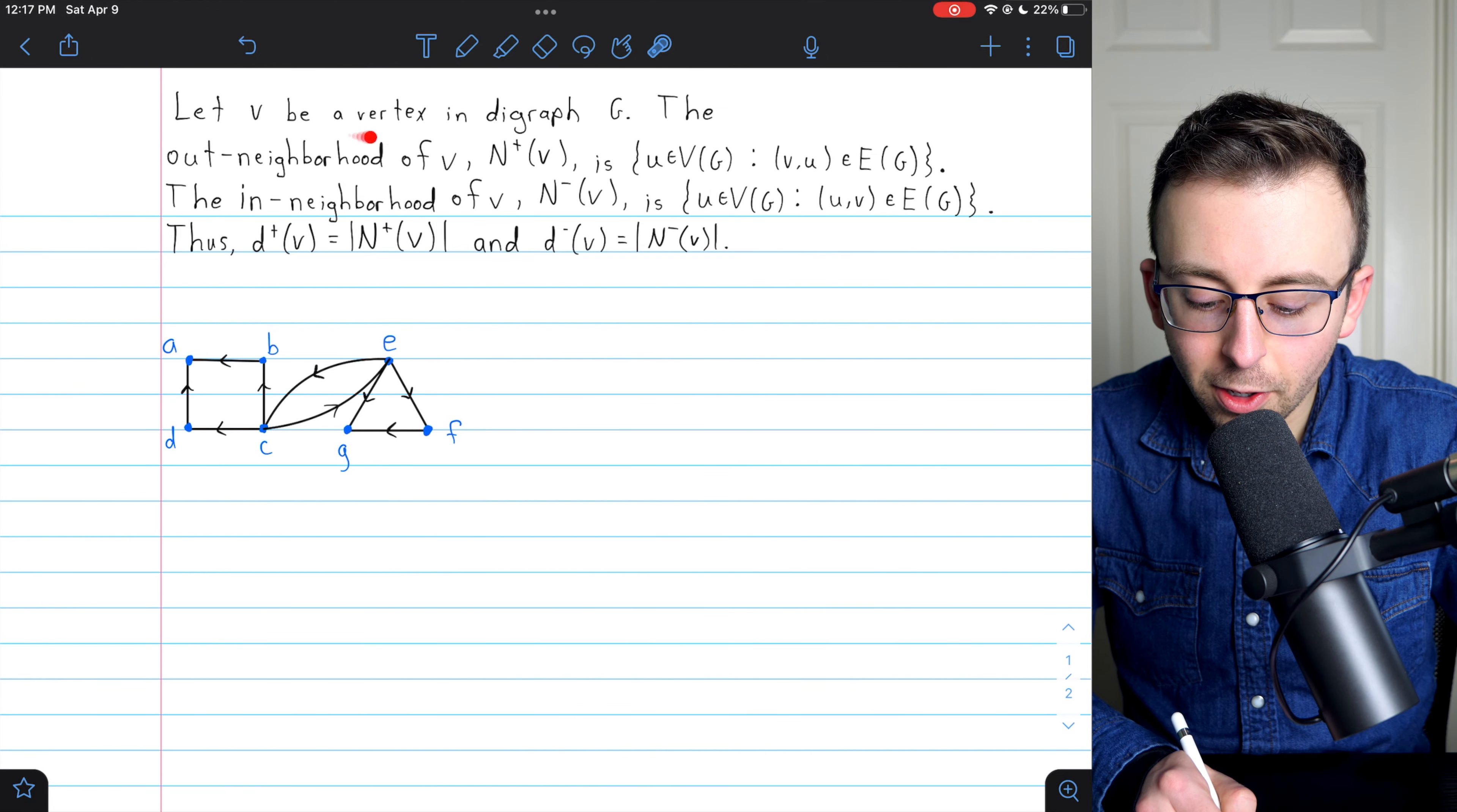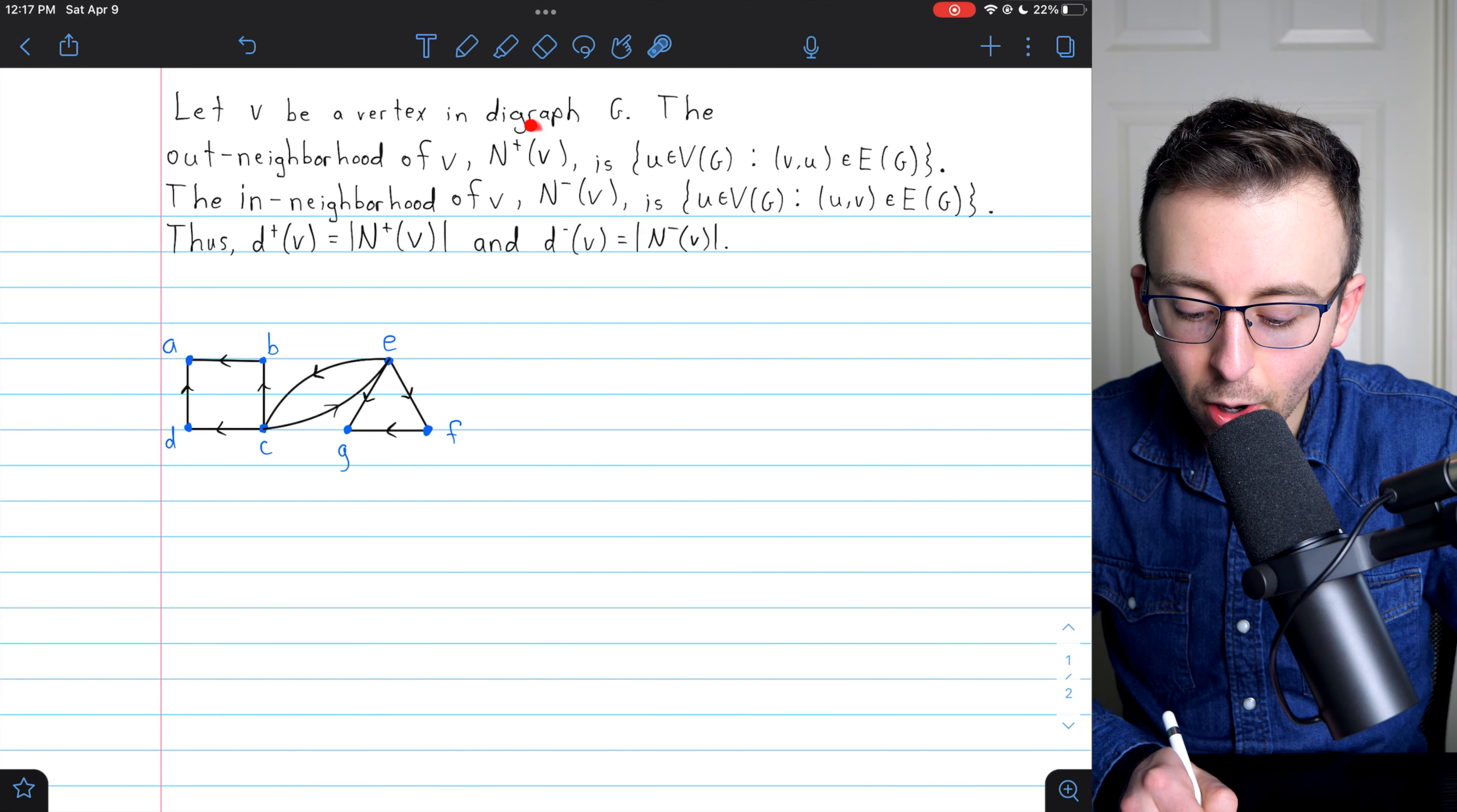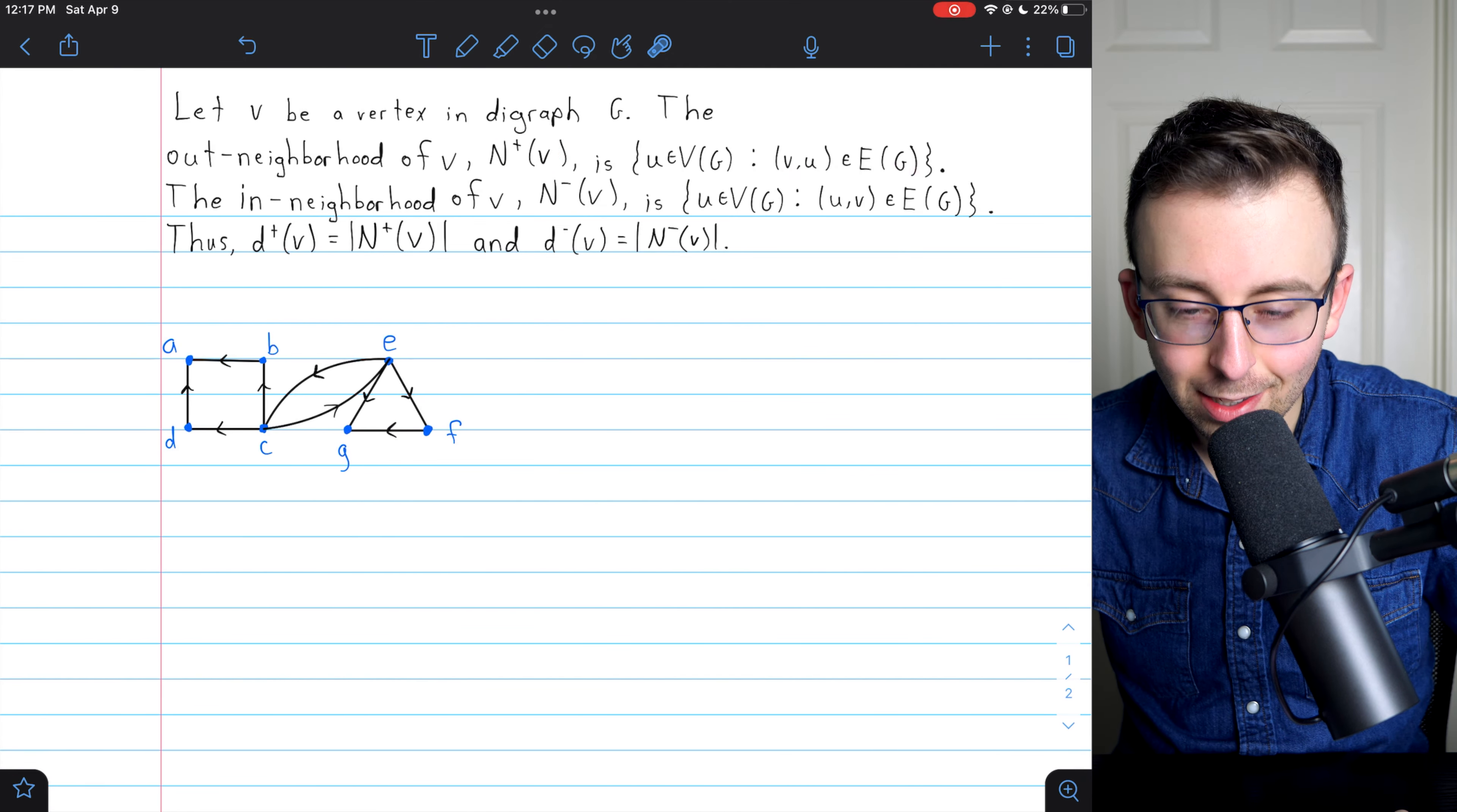Let V be a vertex in digraph G. The out-neighborhood of V, denoted N^+(V), is the set of vertices that V is adjacent to.